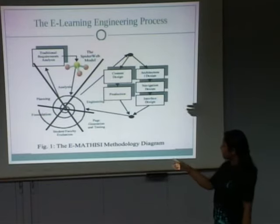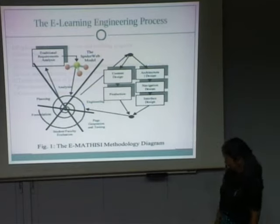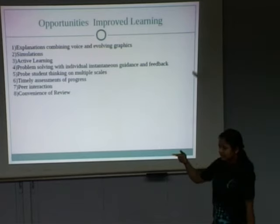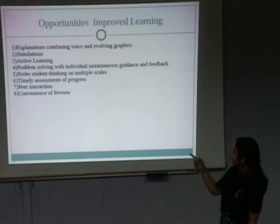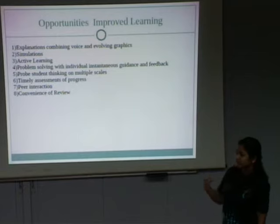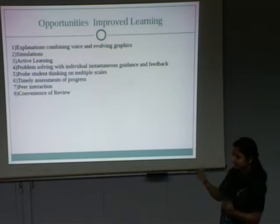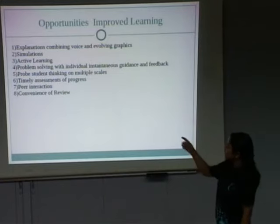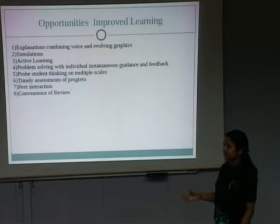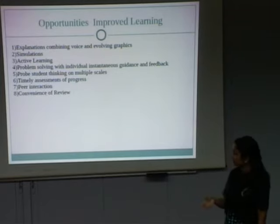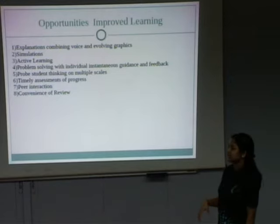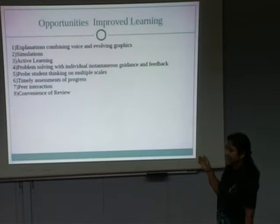After testing, students and faculty evaluate and modifications are made if required. Opportunities in e-learning include combining voice and evolving graphics, so that the learner develops a mental model by integrating the two. Active learning through simulation allows users to visualize real-world processes that cannot be practically connected in reality. In active learning, the user collects, organizes, and integrates information. Problem solving with individual instantaneous guidance and feedback facilities is also available.